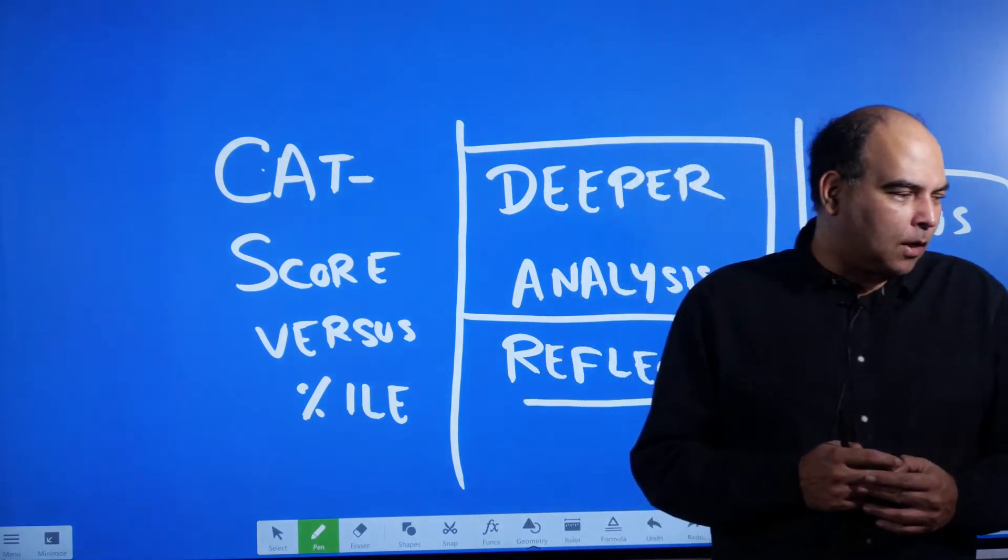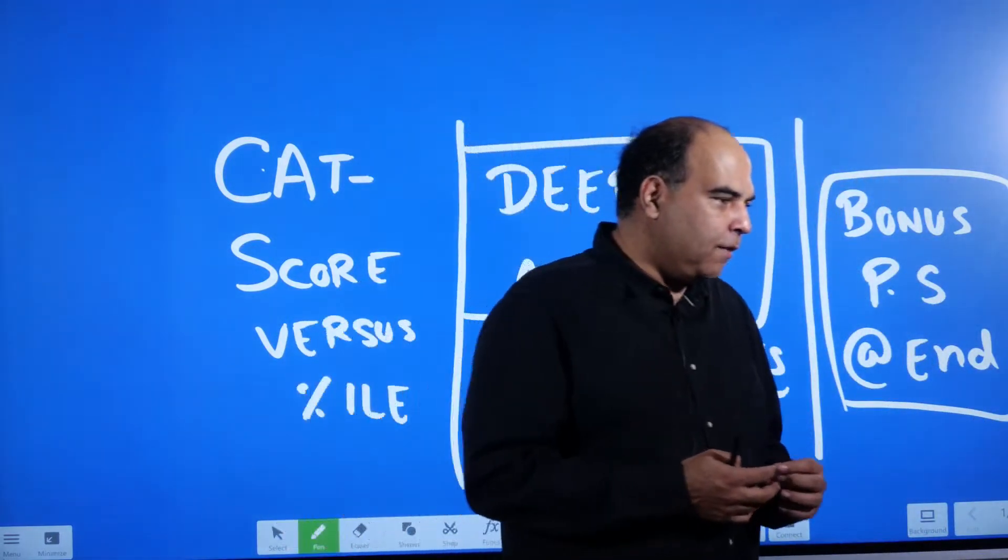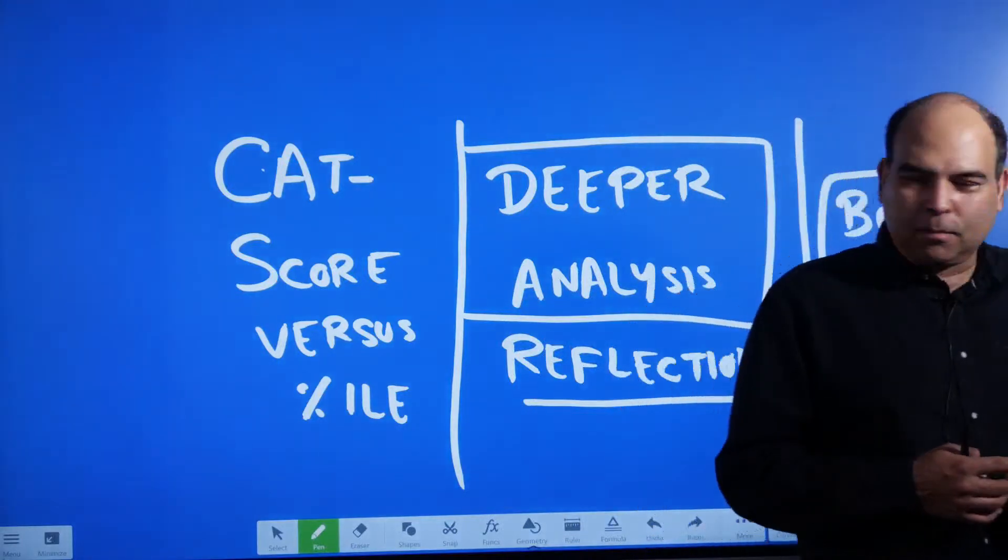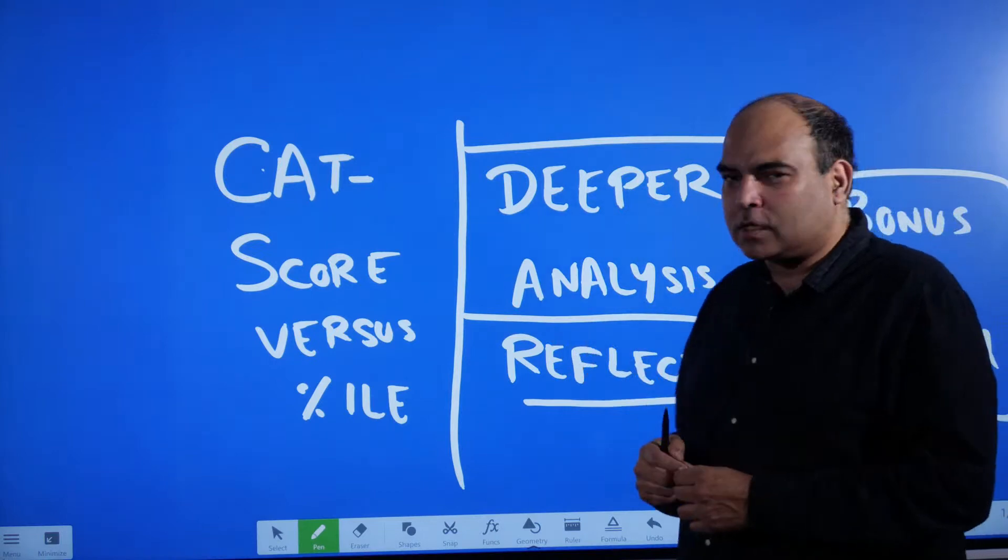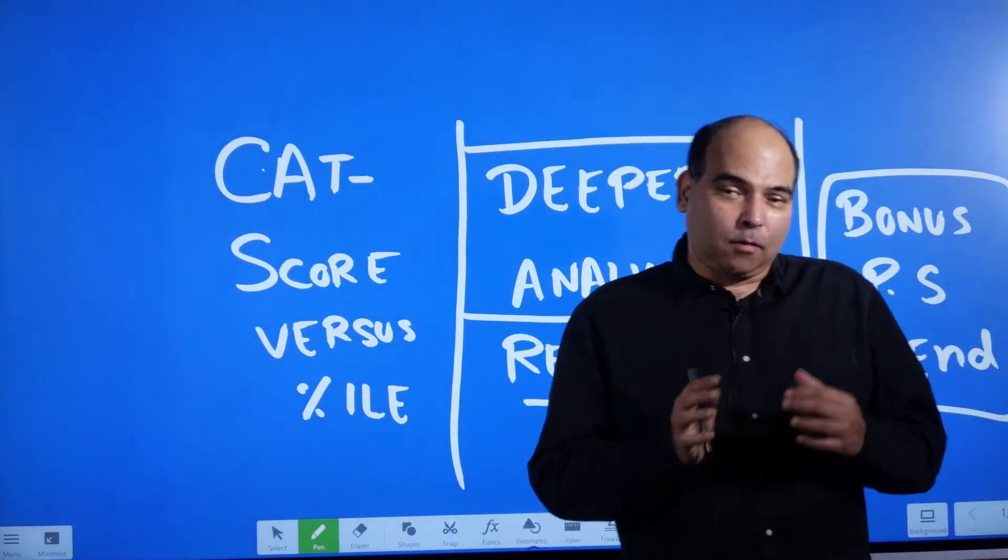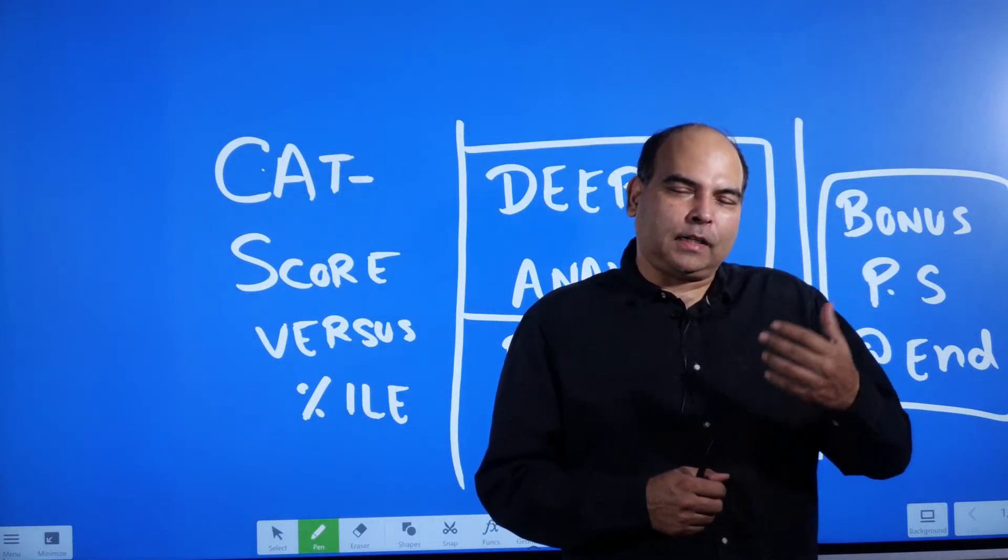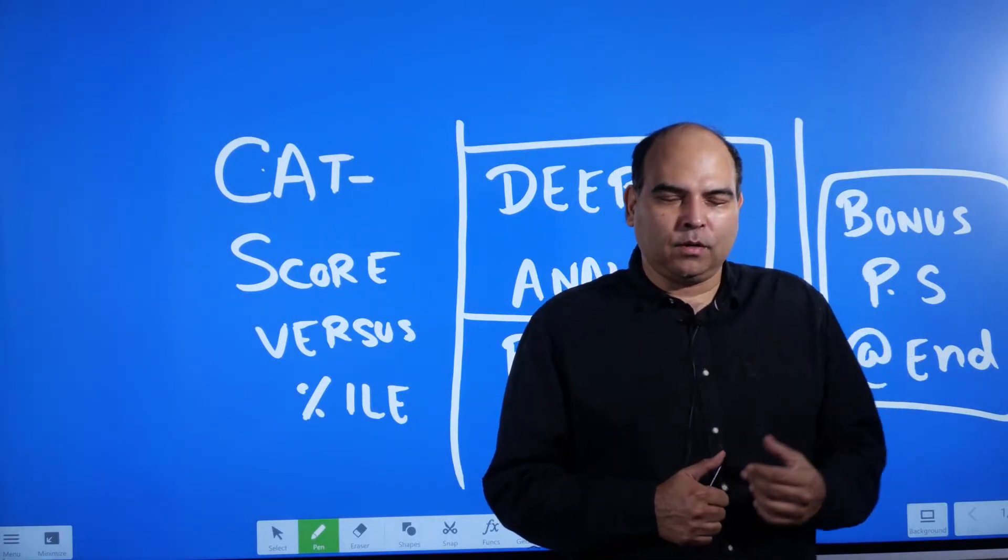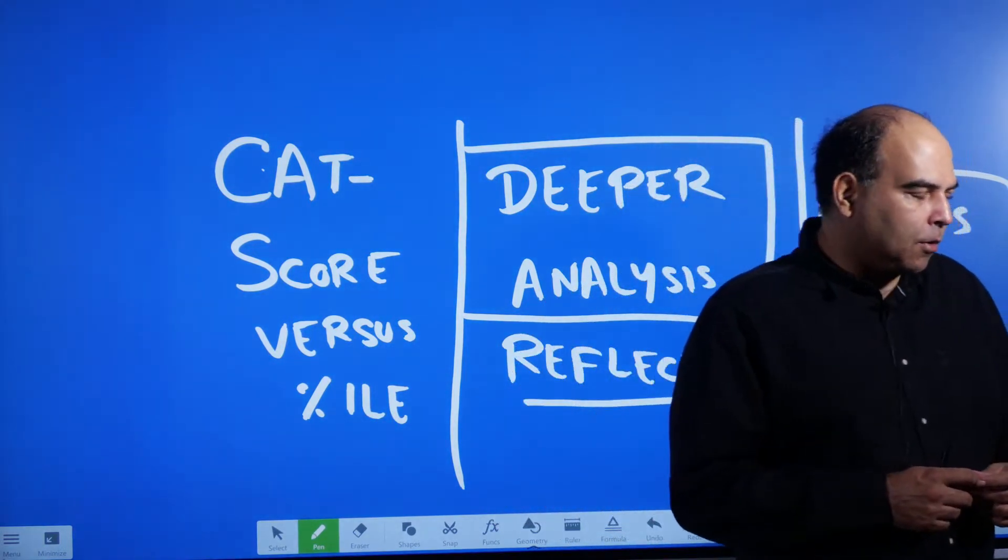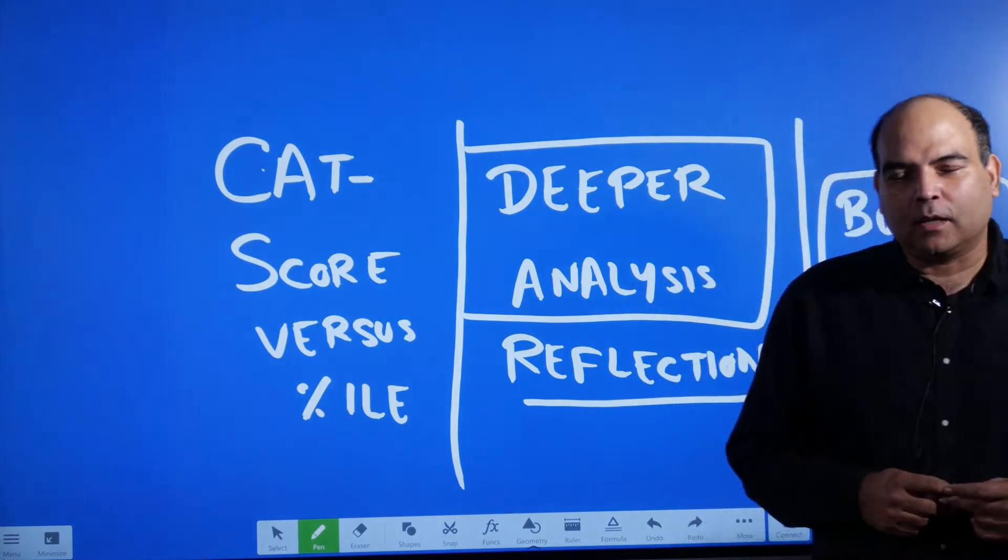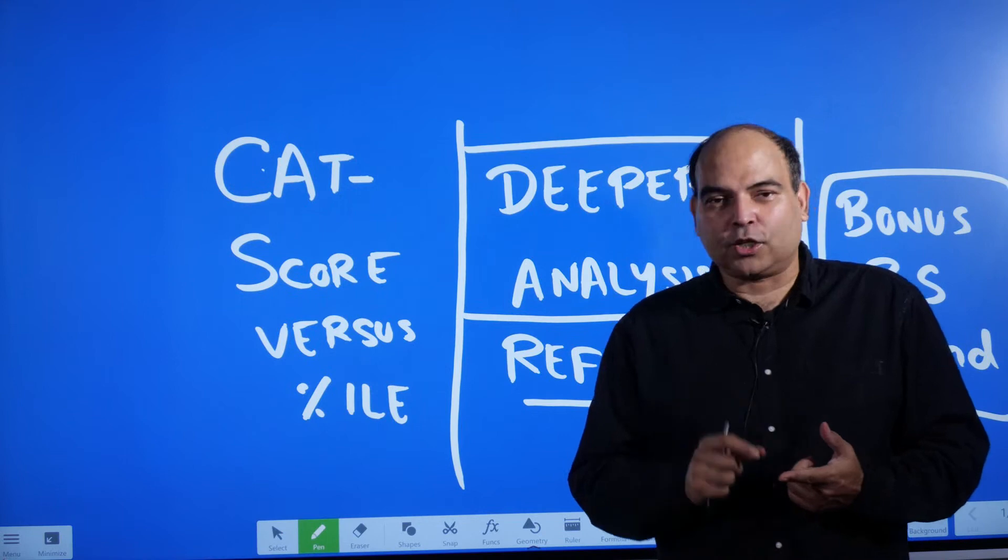And while I will still stick to the numbers I mentioned yesterday, today's session I am basically going through deeper analysis. Hi, good evening everybody. So today's session I am going to take you through deeper analysis and my reflections about the CAT score versus percentile story, about how difficult the CAT was, what are the factors that are reducing the score and what are the factors that will increase the score with respect to last year. And hence, what do I assume is the balance in terms of what scores will happen at what percentile. We are going to do a deep sectional analysis of each section.